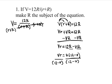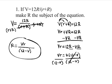The last step is to divide both sides by 12 minus V. They cancel out and you end up with R equals Vr over 12 minus V, and that is your answer.